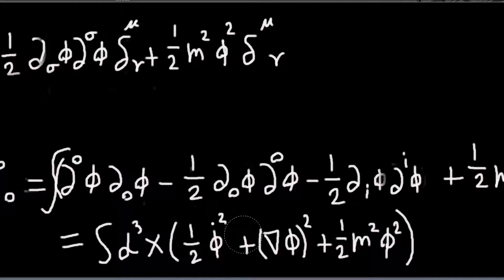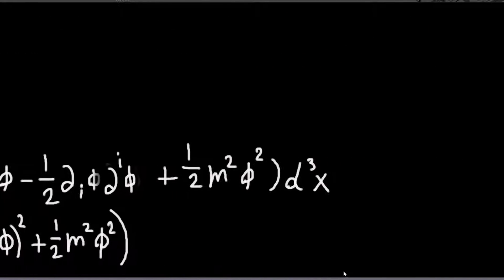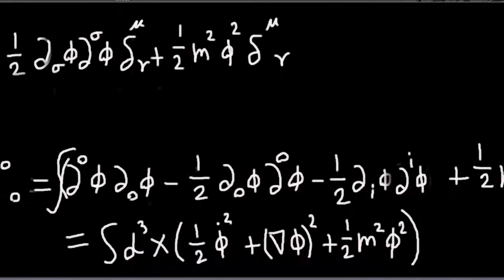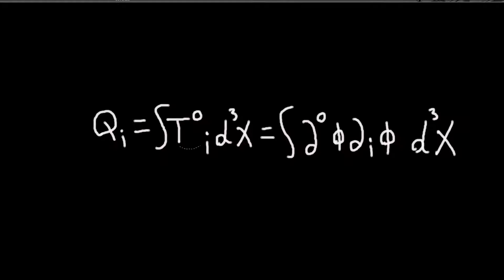So this is our conserved current. Or sorry. Our conserved charge. Which is the energy density of our field. And then finally, one last thing. Is we have our three other conserved charges. Which will be the interval of the time component of the other three currents.